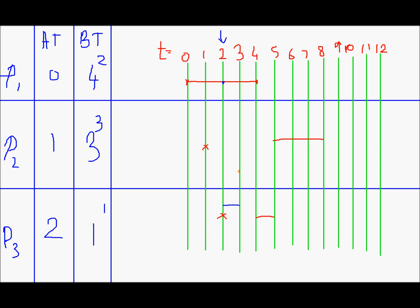We'll calculate the waiting times. P1 didn't have to wait at all. It started execution the minute it arrived. So the waiting time of P1 is 0. The waiting time of P2 is from this instant till this instant, that is 4 units of time. The waiting time of P3 is 2 units.